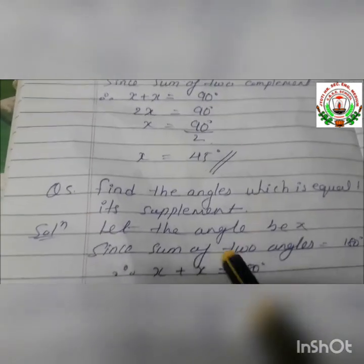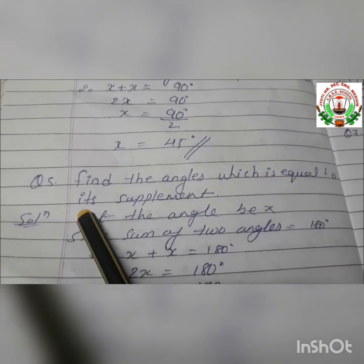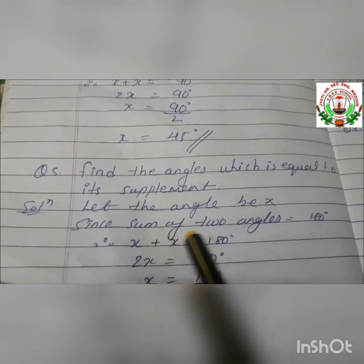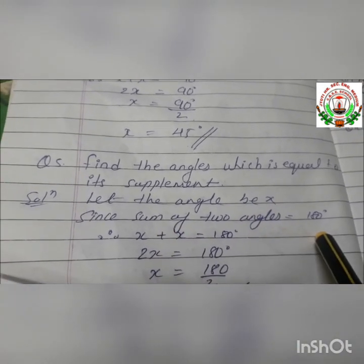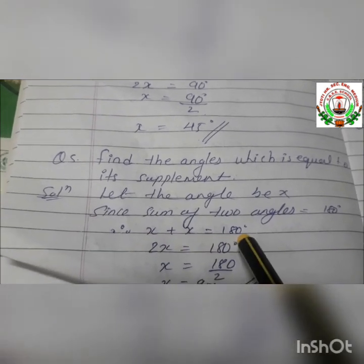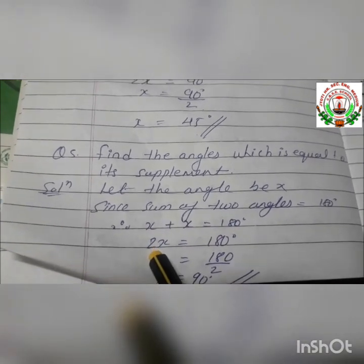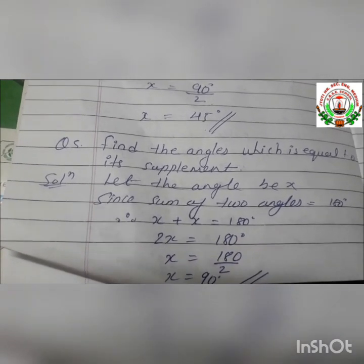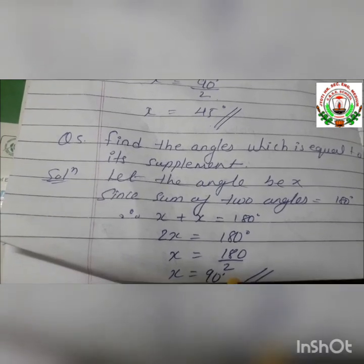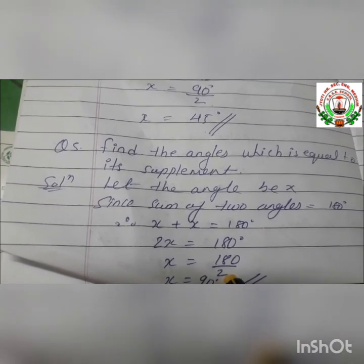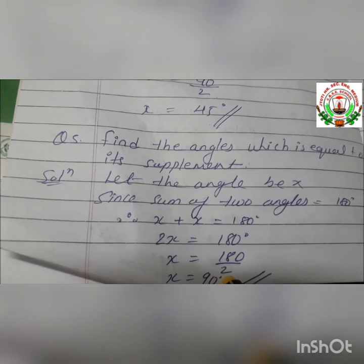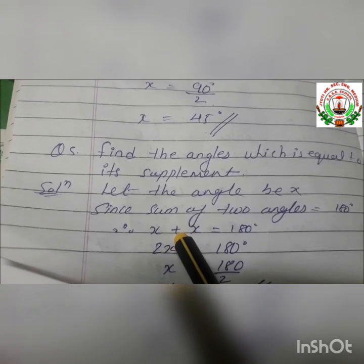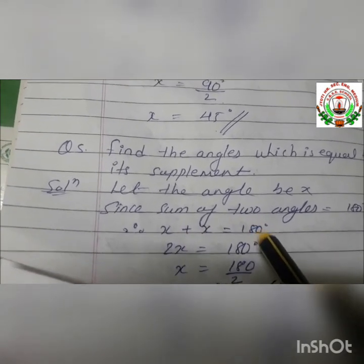Question number 5: find the angle which is equal to its supplement. Let the supplementary angle be X. Since the sum of two supplementary angles is 180 degrees, X plus X equals 180 degrees. So 2X equals 180 degrees, giving X equals 90 degrees. To verify: 90 plus 90 equals 180 degrees, so our answer is correct.